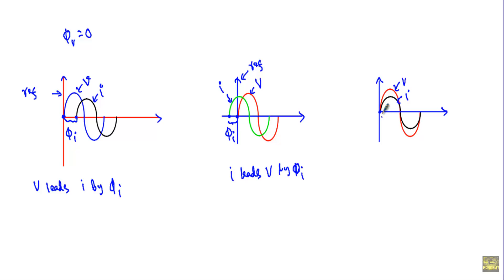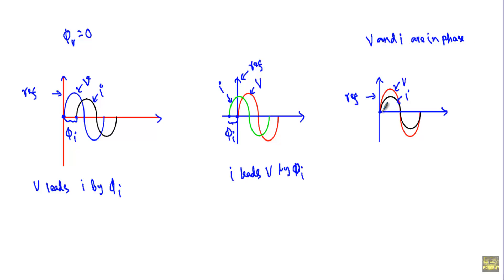Here the origins of the two waveforms are at the same instant. Therefore, with respect to the reference axis, the phase of v and i are the same, and we say v and i are in phase. When two waveforms are in phase, their origins are at the same point, they reach positive maximum at the same instant, they reach the second zero level at the same instant, and they reach negative maximum at the same instant.